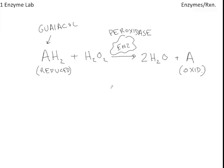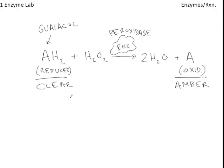Here's what's really important for being able to observe this reaction. In its reduced form, Guaiacol is clear — it has no color. Whereas in the oxidized form, it has an amber color. So to observe the activity of the enzyme, what you're going to be watching is the formation of this amber color from the clear reactant.